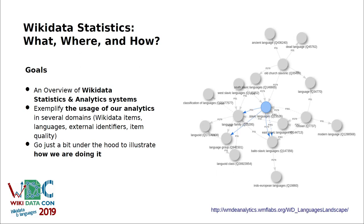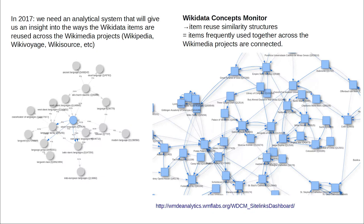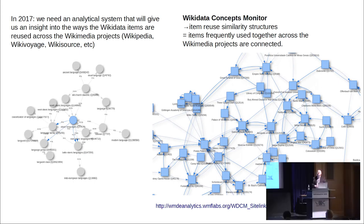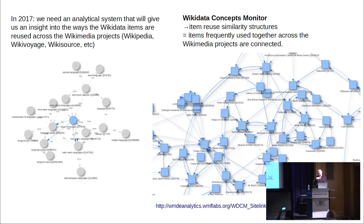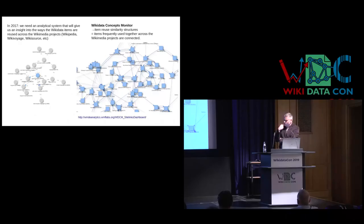In analytics and data science, you always start by formulating your goals and motivations as clearly as possible — otherwise you enter an endless cycle of developing tools that nobody really understands what they're being built for. In 2017, Wikimedia Deutschland formulated a demand: we need an analytical system that gives insight into the ways that Wikidata items are reused across the Wikimedia projects — across the Wikipedia universe, all encyclopedias, Wikivoyage, Wikibooks, and approximately 800 websites we manage.